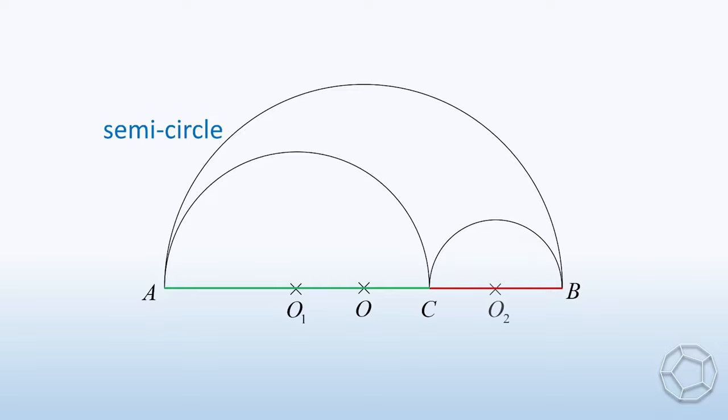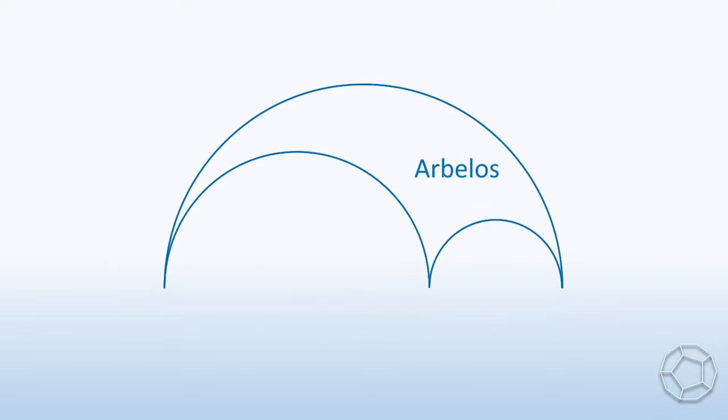Their centers are O1 and O2 respectively. Now, this bounded region is called an arbelos. This shape first appeared in the Book of Lemma by Archimedes. He discussed some interesting properties of arbelos. In this video, we shall look at one of them.